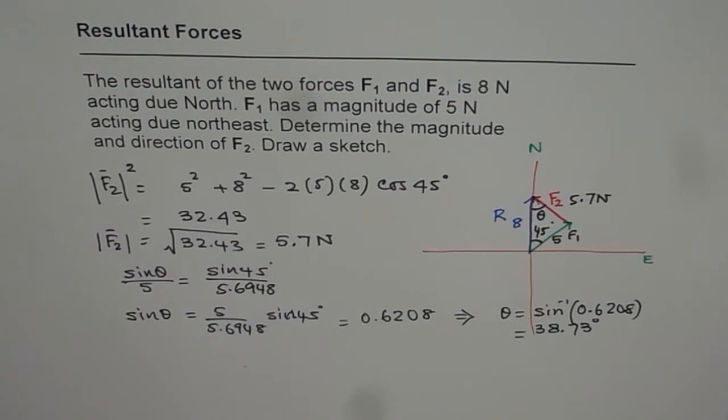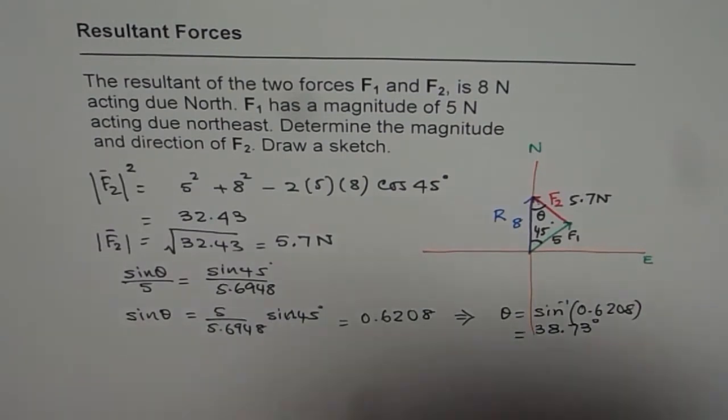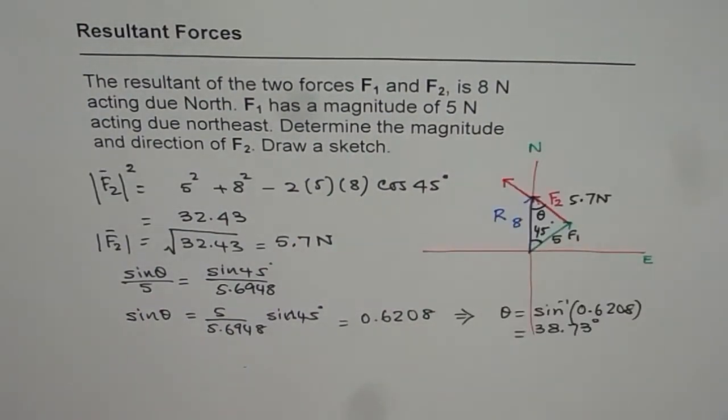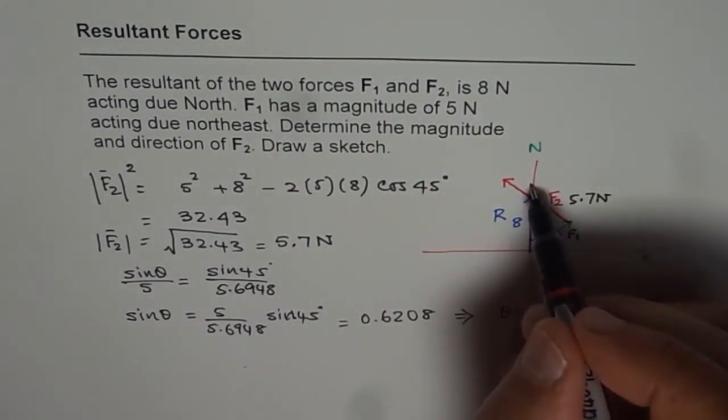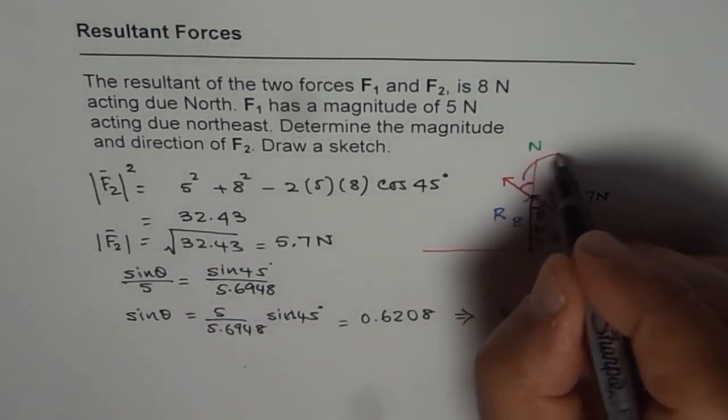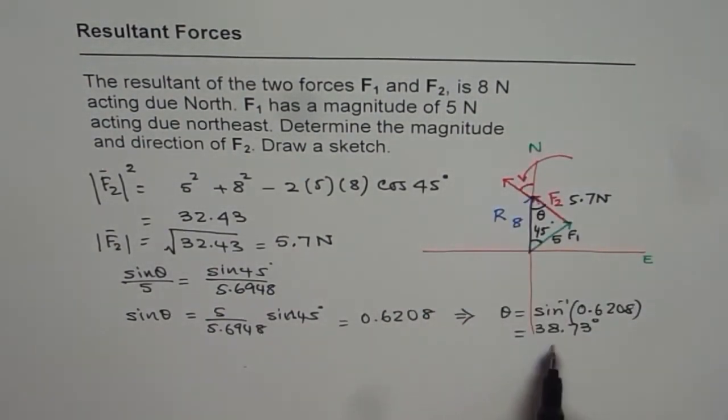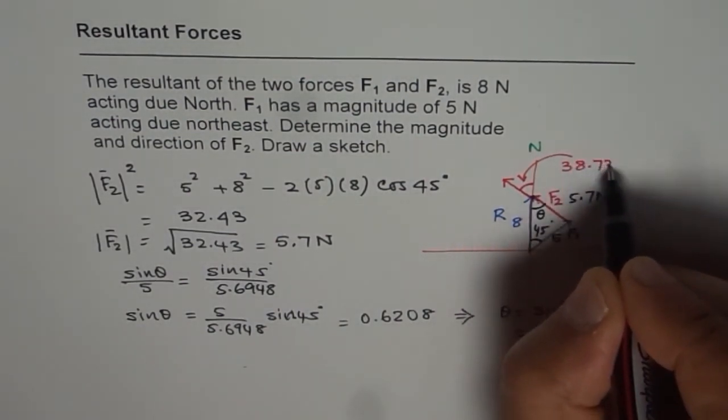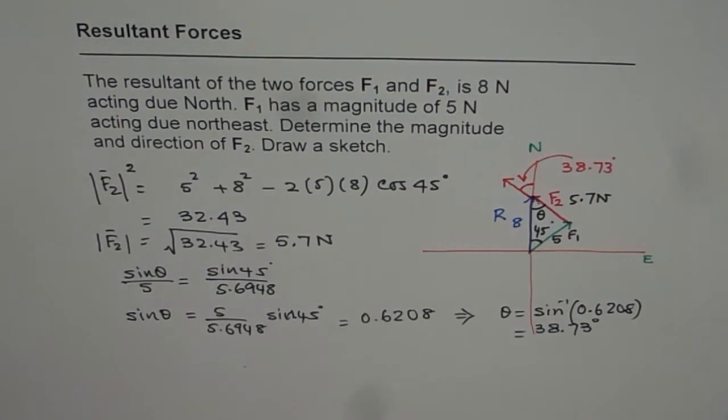So that is the angle which resultant makes. Now to write down our answer, how should we see it? Let's say this is the force. Now that angle theta is also this angle theta. So this angle we calculated just now as 38.73. So we can always say that the resultant is making, or rather F2, the force F2 makes an angle of 38.73 towards west from north. So that is our answer.